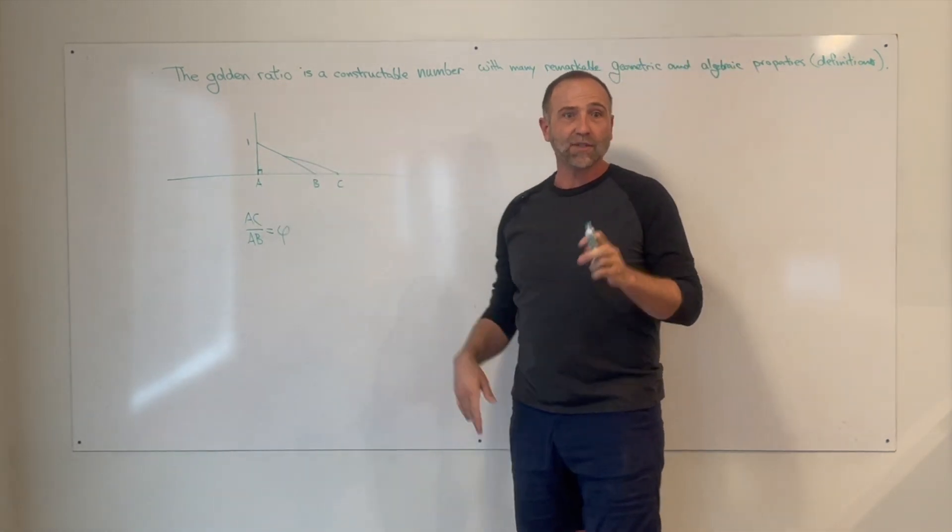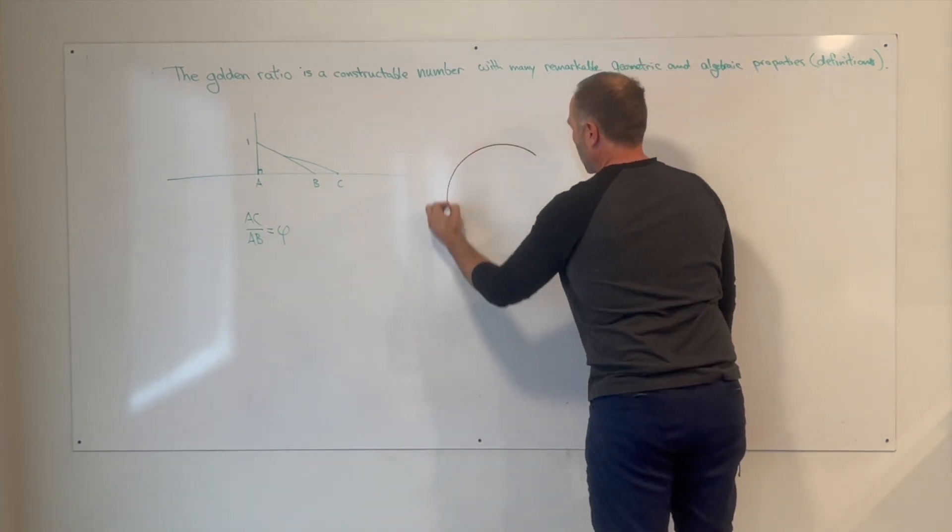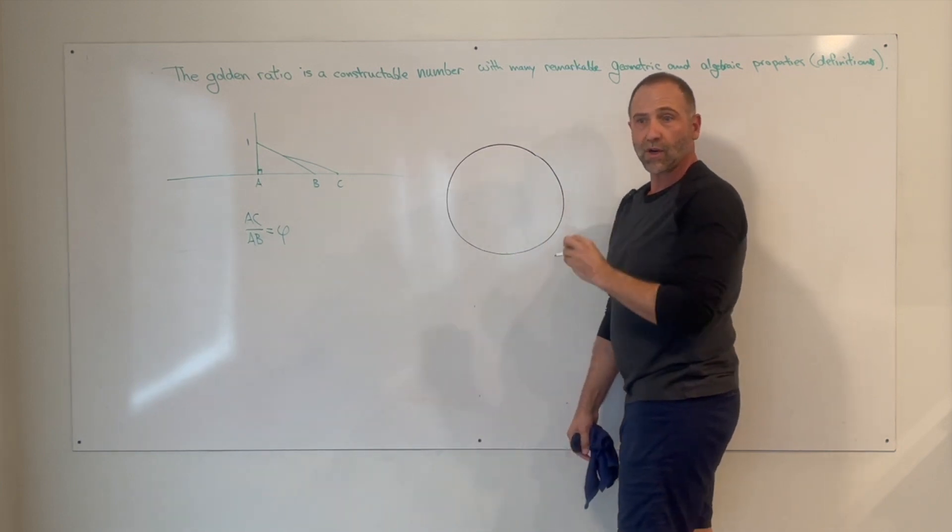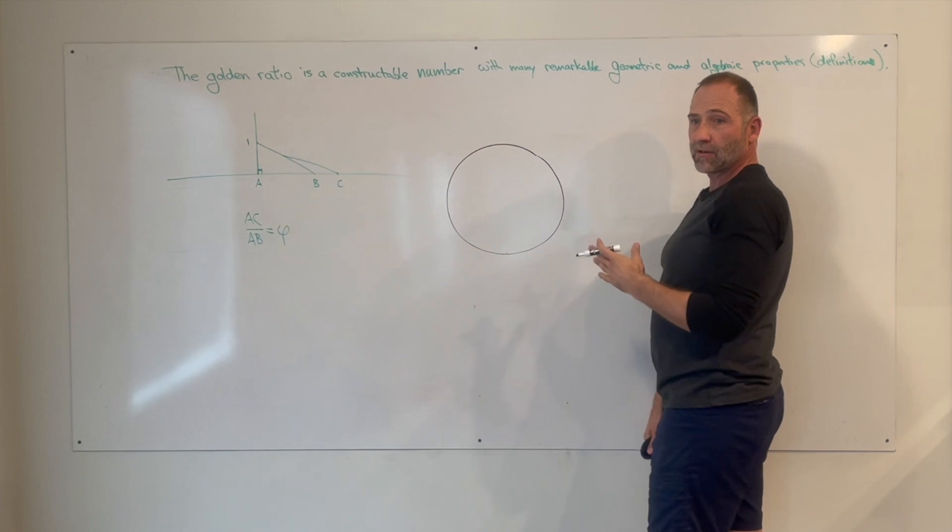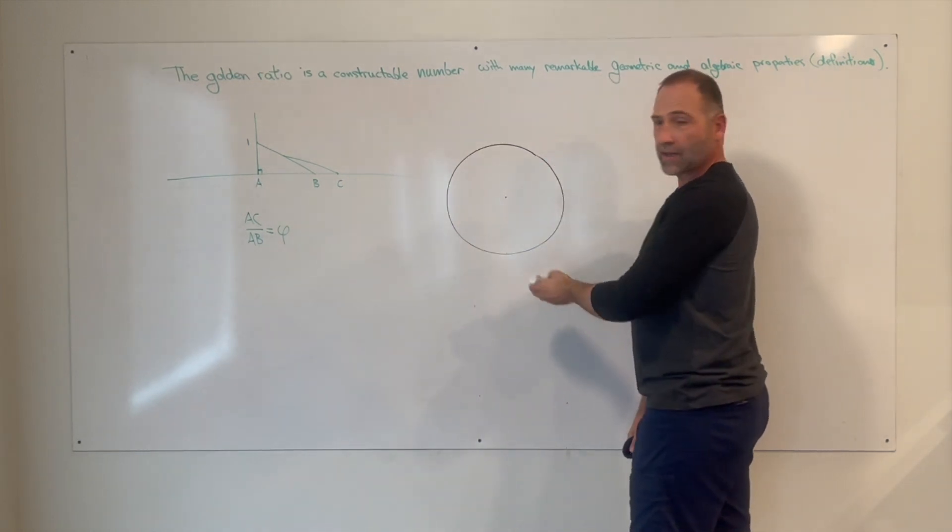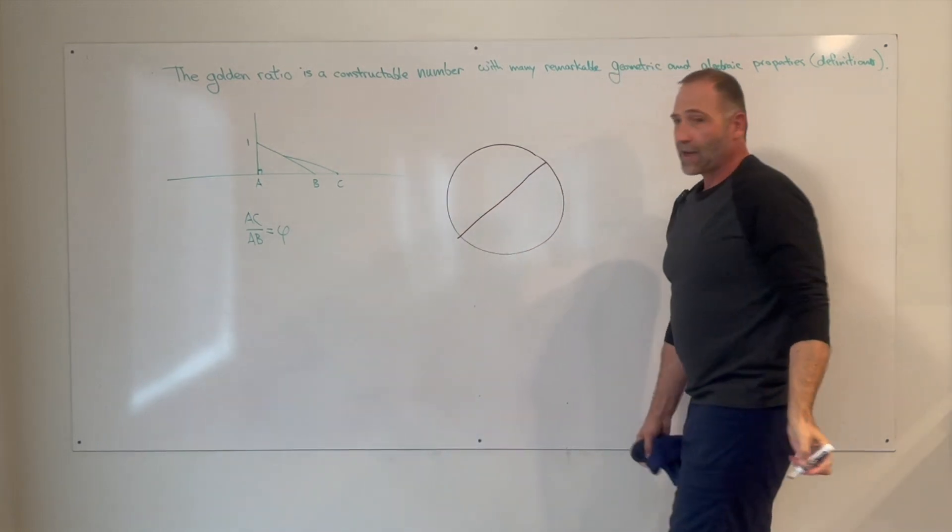You start with a circle. We're going to call whatever size circle you pick, we're going to call its radius equal to one per unit. Now, divide the circle with the diameter. So it has to go through the center point, but you can pick any diameter you want. So we've cut the circle in half.